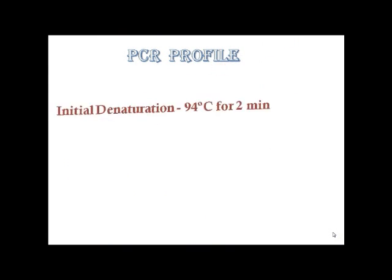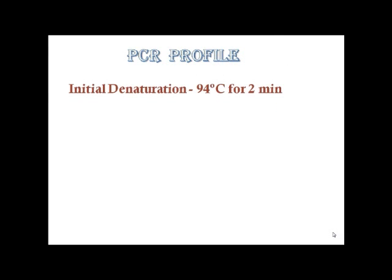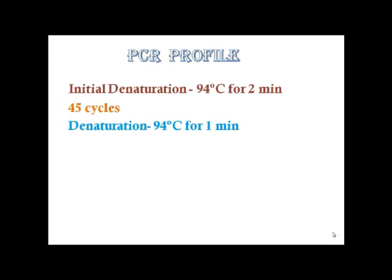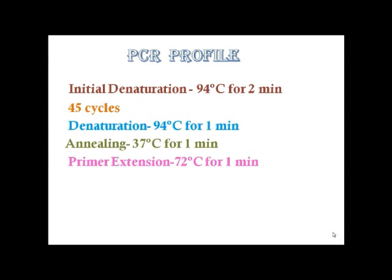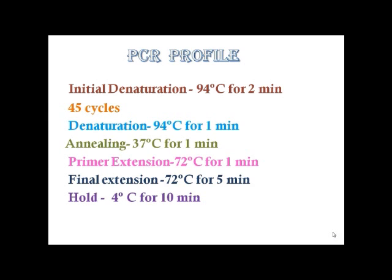The thermal profile was set according to the following conditions: initial denaturation at 94 degrees Celsius for 2 minutes, followed by 45 cycles of denaturation at 94 degrees Celsius for 1 minute, annealing at 37 degrees Celsius for 1 minute, primer extension at 72 degrees Celsius for 1 minute, final extension at 72 degrees Celsius for 5 minutes, and final hold at 4 degrees Celsius for 10 minutes.